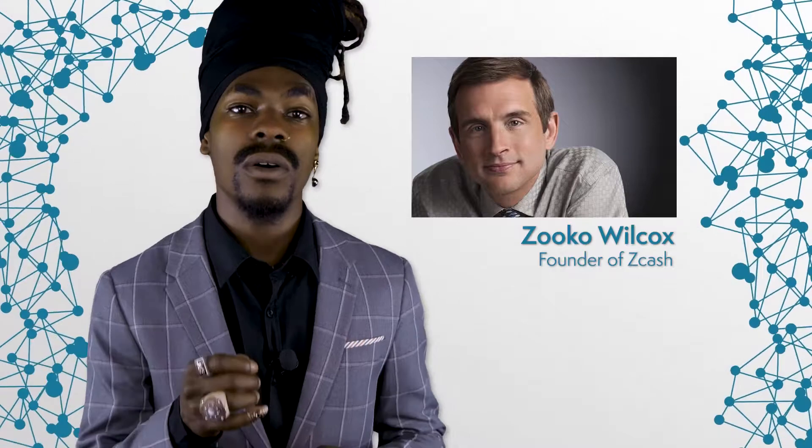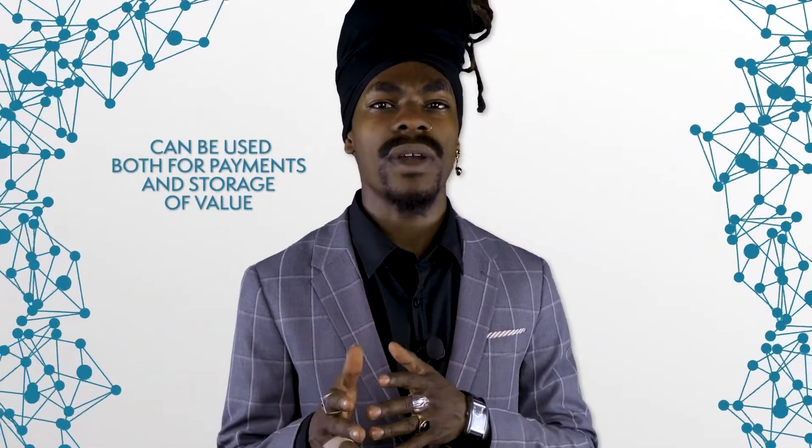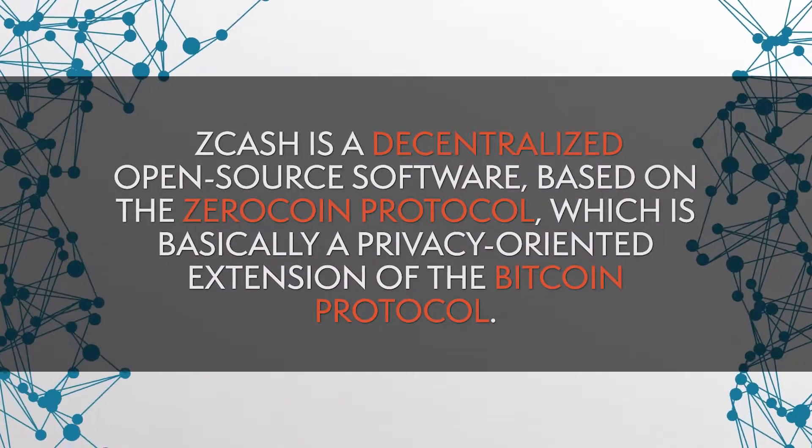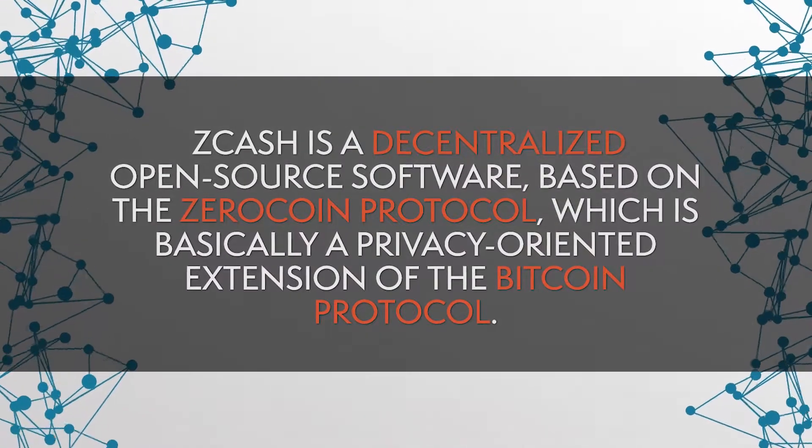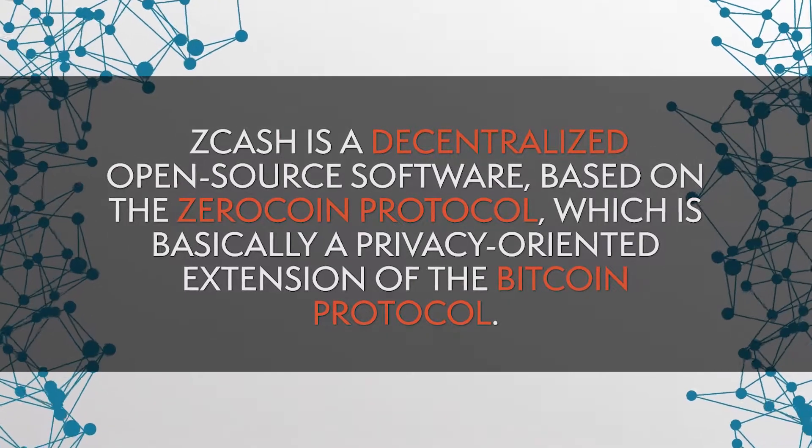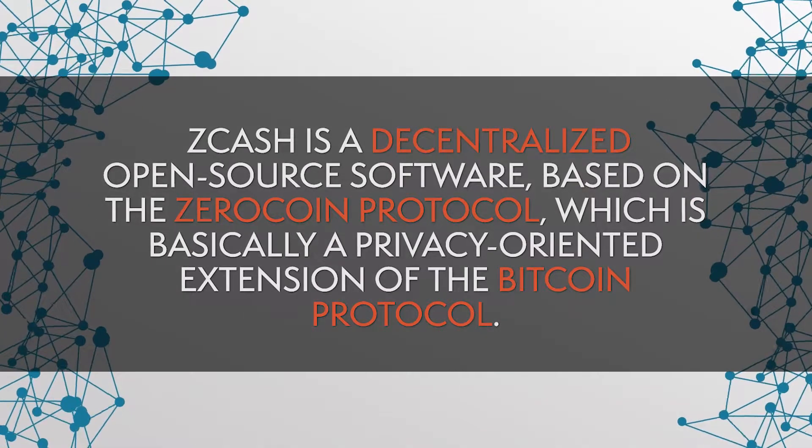Zcash was brought to life at the end of 2016 by Zuko Wilcox. The currency can be used for both payment and storage of value, and is primarily characterized by high anonymity. Zcash is a decentralized open-source software based on the Zerocoin protocol, which is basically a privacy-oriented extension of the Bitcoin protocol. That is why Zcash and Bitcoin share many similarities. For all of you who are not familiar with the concept behind Bitcoin, please check out our analysis.